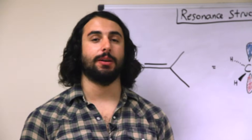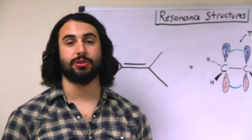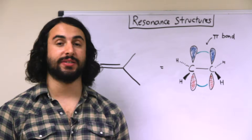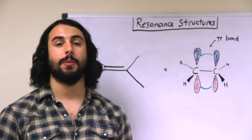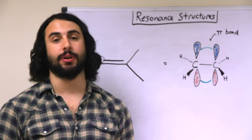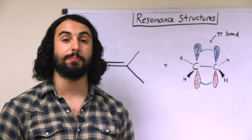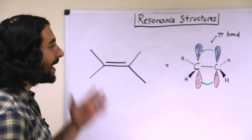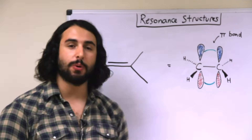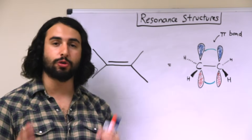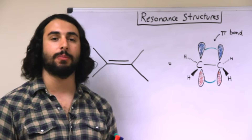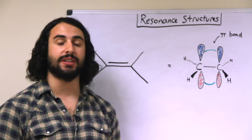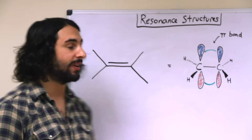A very important concept in organic chemistry is resonance, and in order to understand resonance we're going to have to understand pi electrons, because pi electrons are the ones that participate in resonance. A pi bond — basically if we remember — a double or triple carbon-carbon bond consists of one sigma bond and either one or two pi bonds.